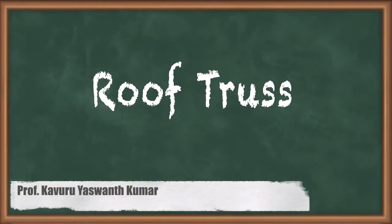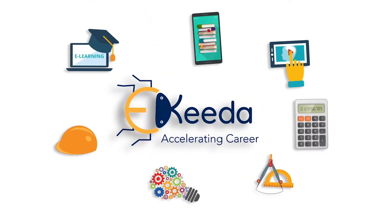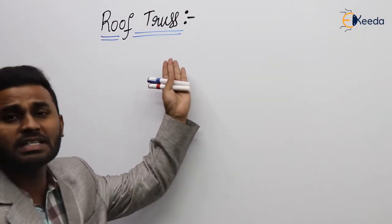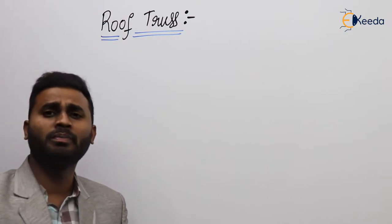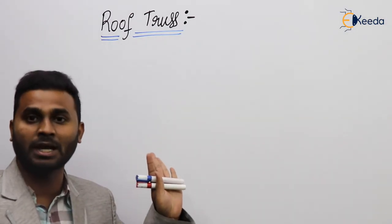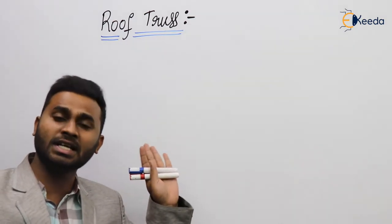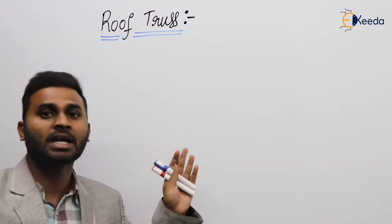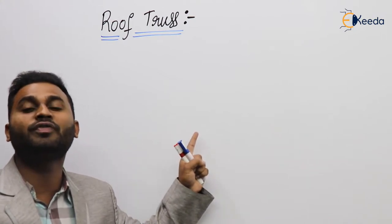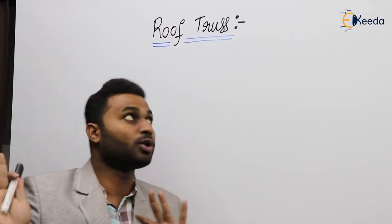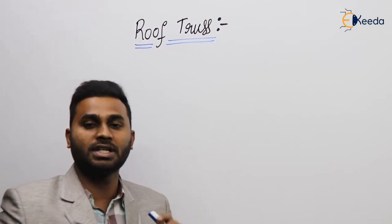In this video we are going to discuss about roof trusses. The next topic in our discussion is roof truss. Mainly we are going to use this roof truss in industrial building for roof covering. For supporting the roof covering material, we are going to use a truss. The truss is known as roof truss and mainly we are going to see this roof truss in industrial building, but also for rooftop and many other areas.